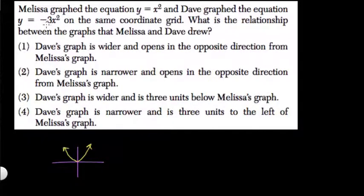Dave's graph has negative 3x squared, so it will be steeper and going downward. A negative parabola opens downward, and because the absolute value of this number is larger than 1, which is what it is here, it's steeper. So it's negative and steeper.